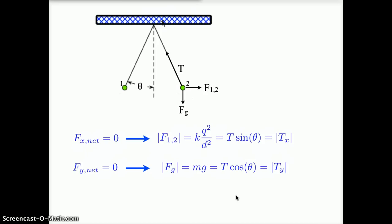Sometimes in this situation you might subtract one equation from another, trying to get rid of one of the things you don't know. What we're going to do is actually divide the top equation by the bottom equation. So we take T sine theta divided by T cosine theta equals kq squared over d squared divided by mg. The T's cancel out and sine over cosine gives us tangent theta is equal to kq squared over mg d squared.